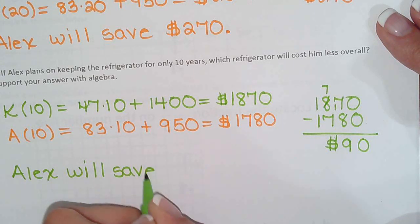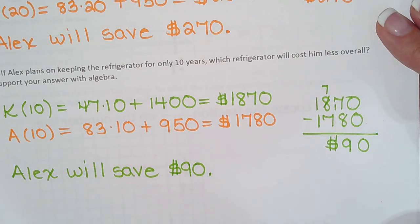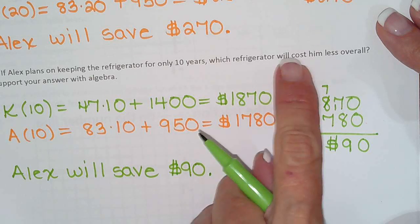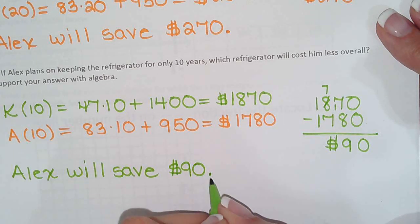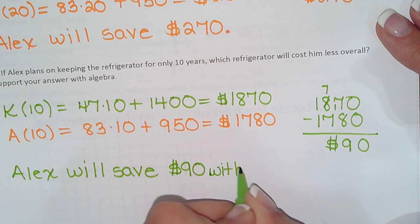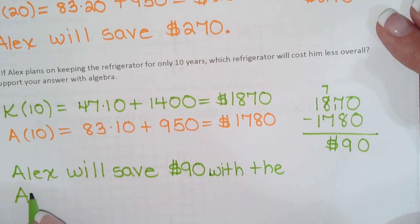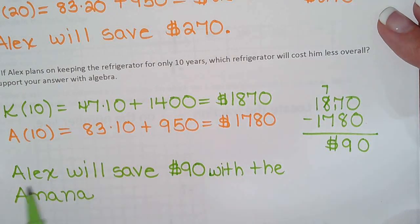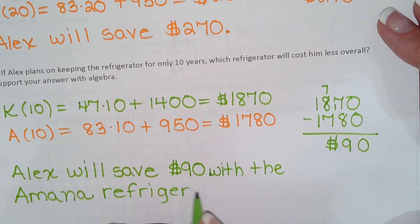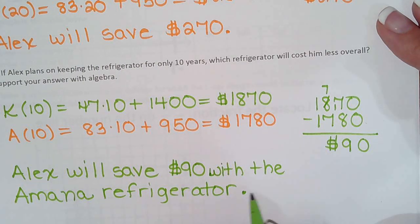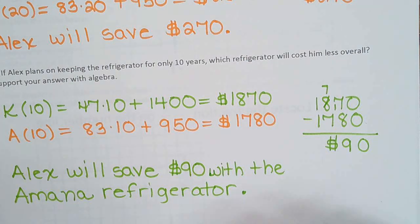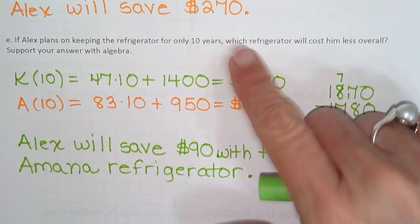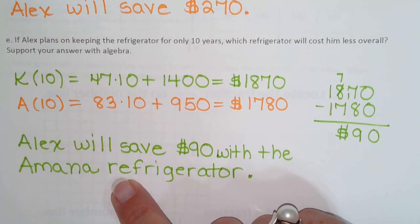Which refrigerator will cost less? So which one costs less? The Amana. We'll save $90 with the Amana refrigerator. Just like the Amana colonies we had in Iowa. Alex will save $90 with the Amana refrigerator. We supported it with algebra. We said which refrigerator. And I think we're good.